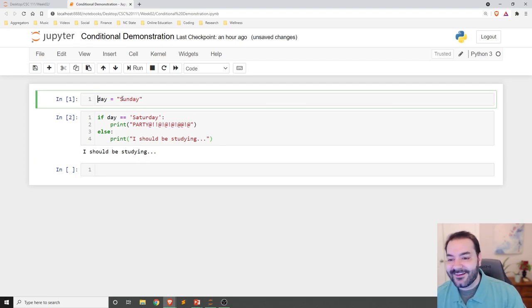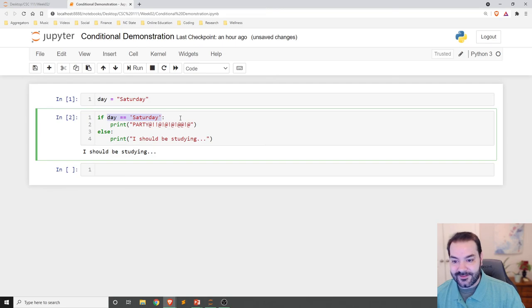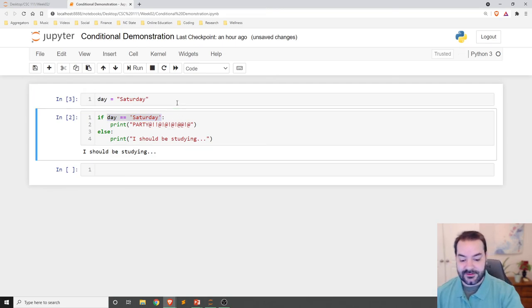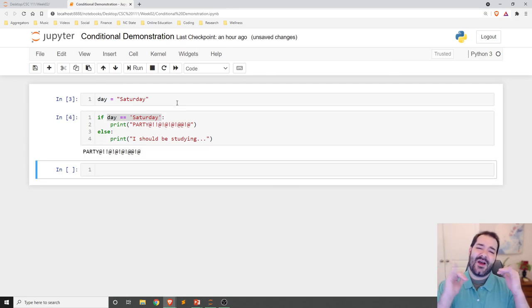But we could change that. Change this to Saturday. We're now just going to see what we think will happen. We'll do the comparison. Is day equal to Saturday? We shift enter. We've loaded our new changes. Party! Woo!